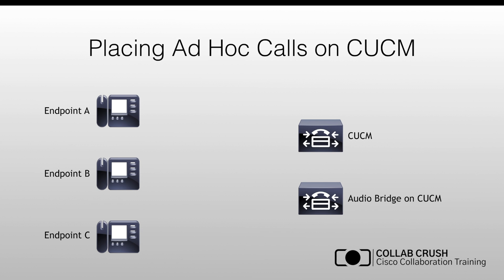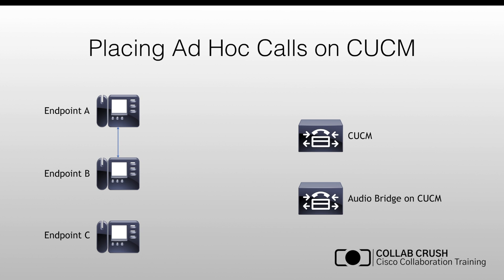To give an example of how this works, let's say endpoint A is going to call endpoint B. The call setup goes through the CCM — the SIP invite message, trying SDP, all of that. Once the ports are opened, the media — audio and video — flows point-to-point between A and B.